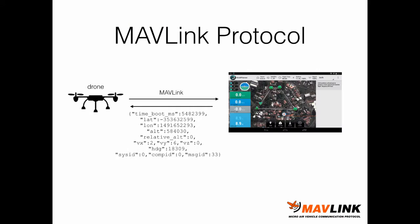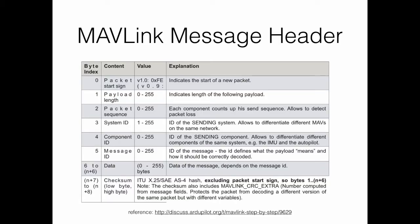The drone communicates with the ground station through the exchange of MAVLink messages. In this video, I will present an overview of these messages and their structure. It is not intended to go into details, but rather to give an introduction to how these messages are built and exchanged. You can refer to the link presented in this slide for more details.